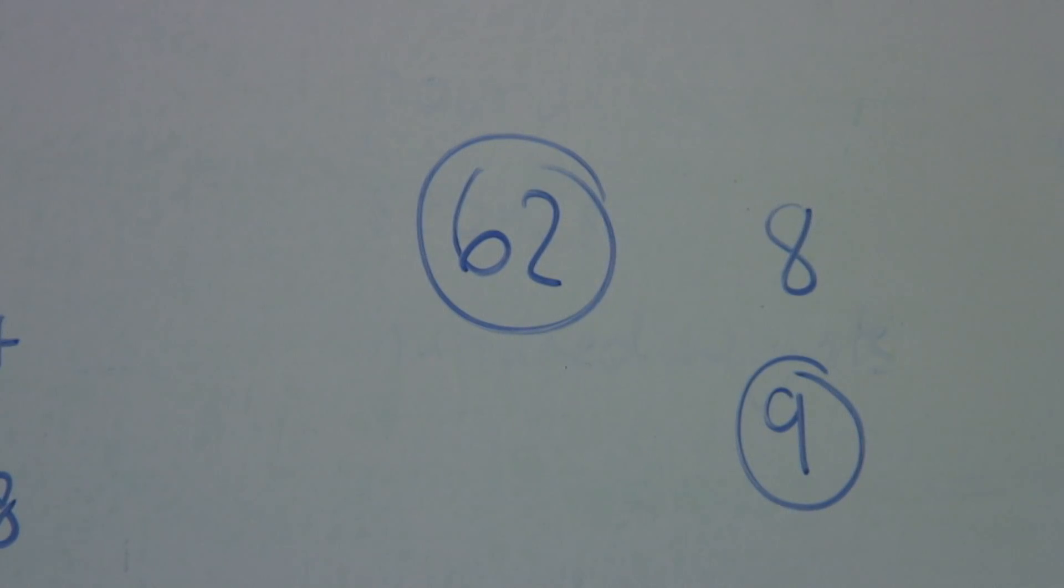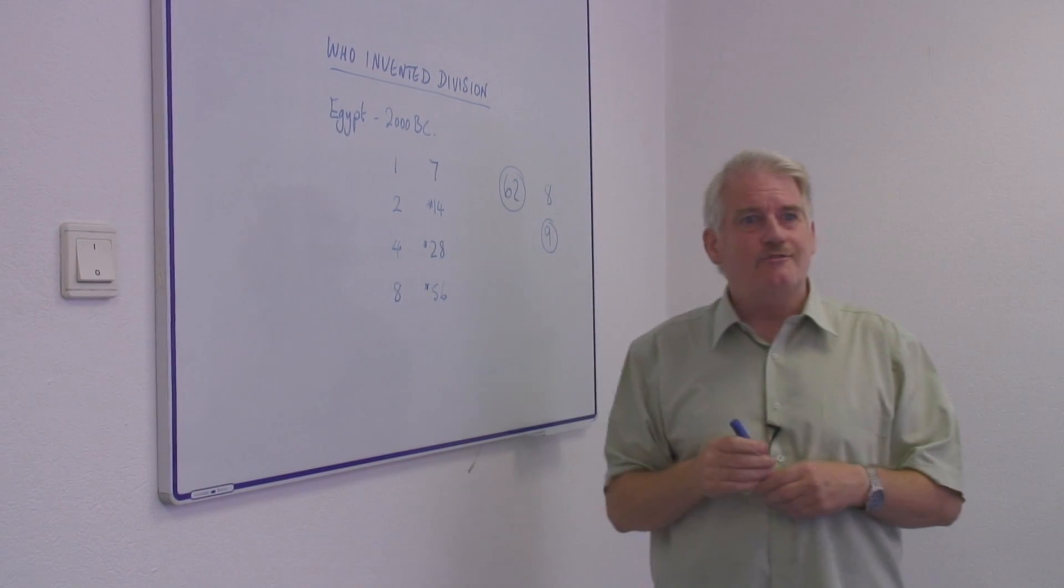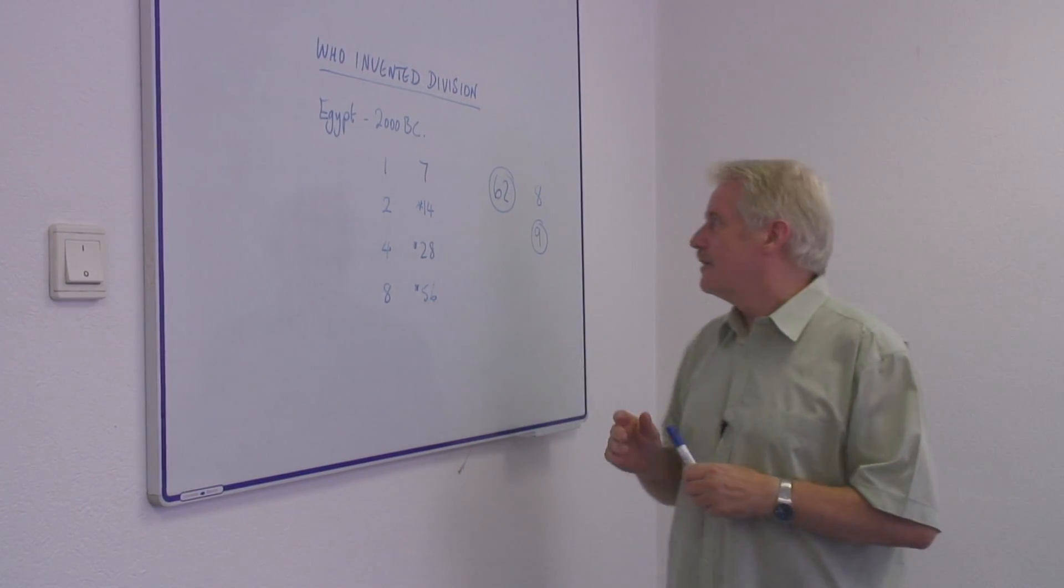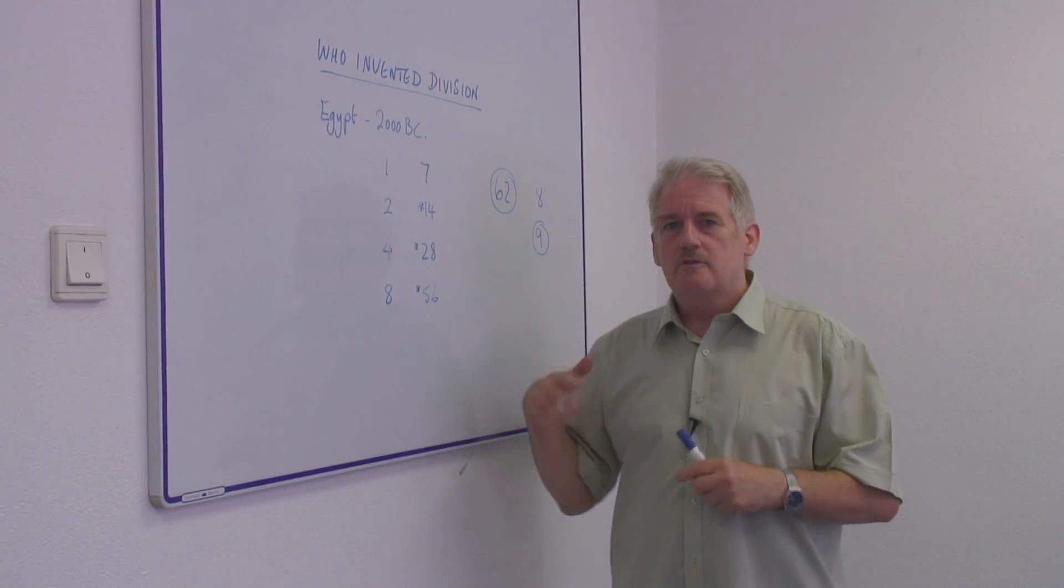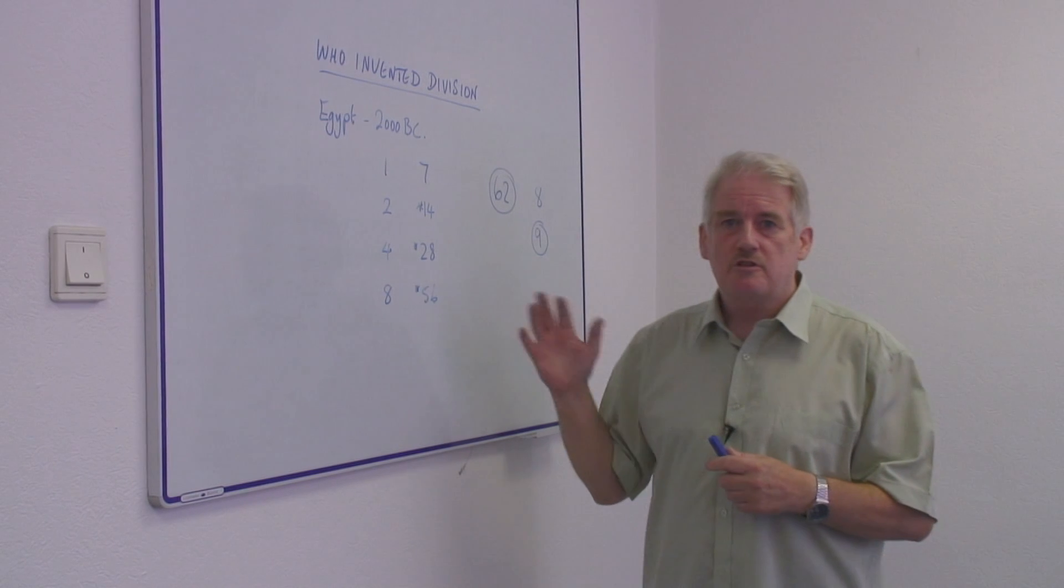Not a very exact system, but of course dividing is not an exact process. In other words, the answer is somewhere between eight and nine. So, this process is what the Egyptians did.